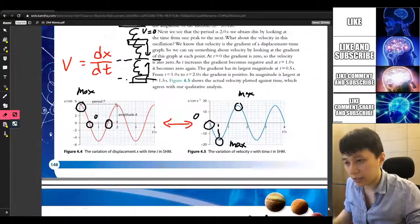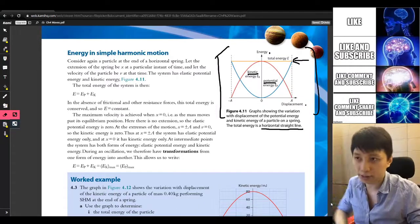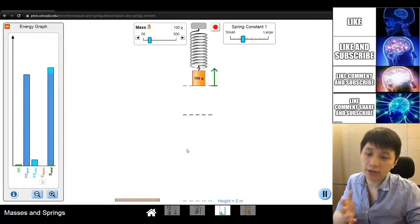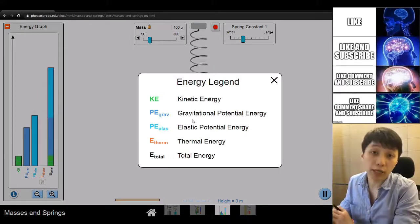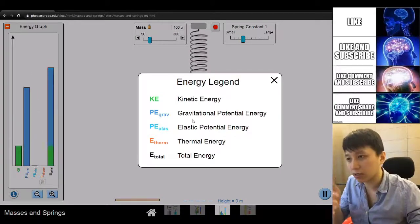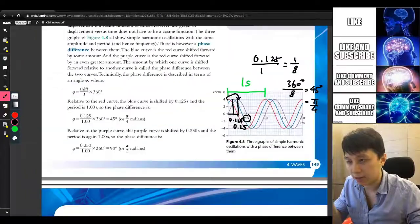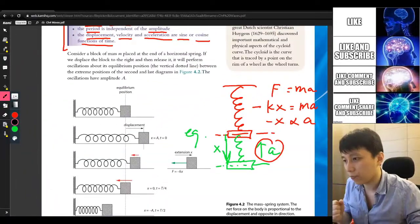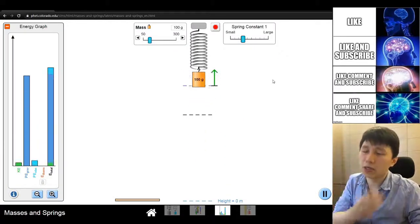But in our simulation, because we are doing it in a vertical direction, it will involve more than two kinds of energy, and that is obviously the gravitational potential energy as well, not just the elastic potential. The one that you can see here is actually referring to elastic potential. But when you do it vertically, you actually have three kinds of energies.